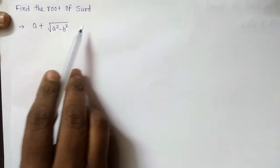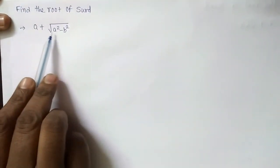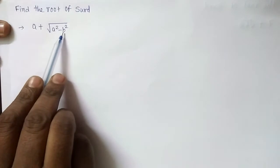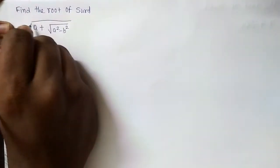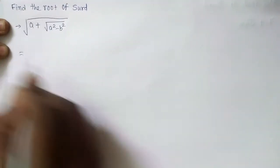See the question: find the root of the surd. The surd is given as a plus under root of a square minus b square. We need to take the root. So I'll begin with under root of this.